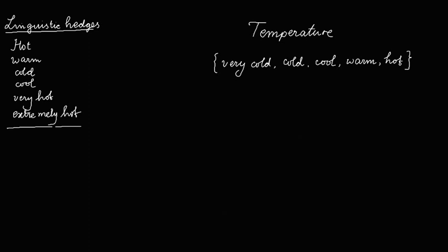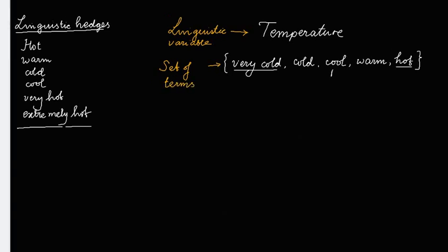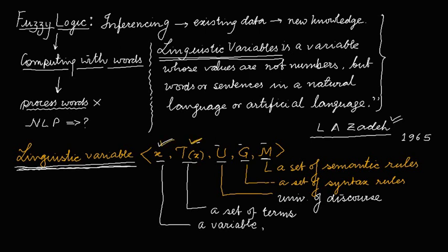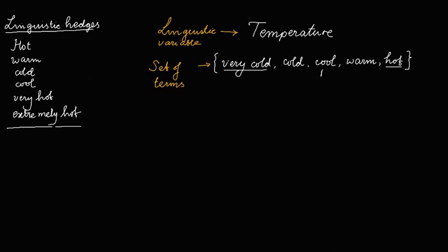Notice that we have taken five terms, which is an odd number. These terms are deliberately kept odd so that we have something in the middle of the extreme terms. The extreme terms are very cold and hot, and cool is going to be the middle term. This is our linguistic variable 'temperature' and these five terms are our set of terms T(x). Now let us define a number range corresponding to these temperatures.